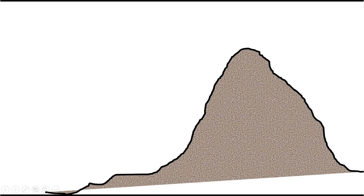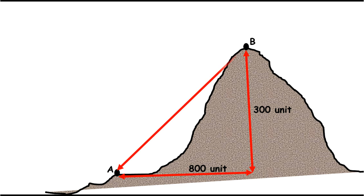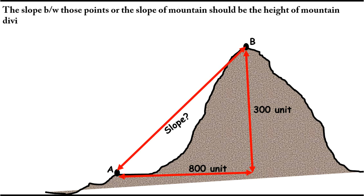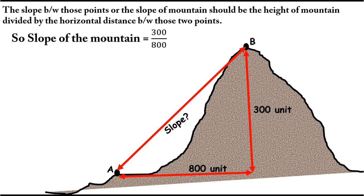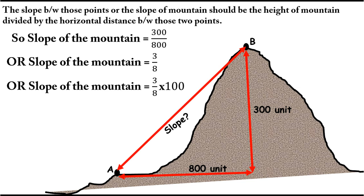Let's have one final example. Calculate the slope of the given mountain from the given data. In the solution, if you see the height and breadth between those two points are known, the slope of the mountain should be the height divided by the horizontal distance between those two points. So we get 3:8, or 37.5 percent, as the slope of the mountain.